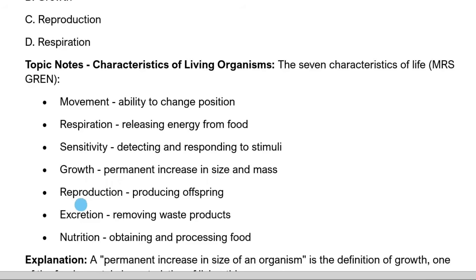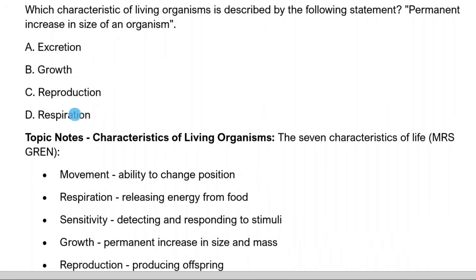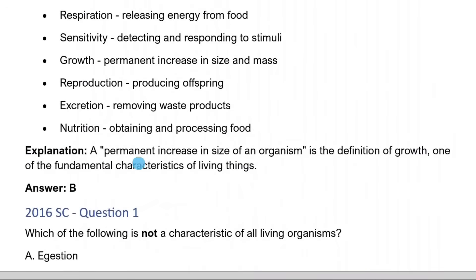Then R stands for reproduction — producing offspring. E stands for excretion — removing waste materials. N stands for nutrition — obtaining and processing food. When we go back to our question, which characteristic of living organisms is described by the following statement — permanent increase in size of an organism? A, excretion; B, growth; C, reproduction; D, respiration. The answer is B. Explanation: a permanent increase in size of an organism is the definition of growth, one of the fundamental characteristics of living organisms.